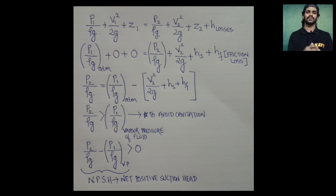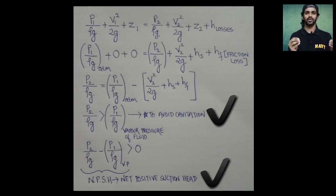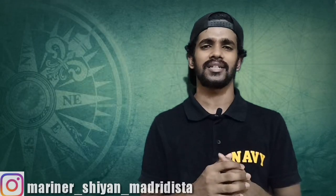To summarize: the pressure at the eye of the impeller should always be greater than the vapor pressure of the fluid — if not, cavitation will occur. NPSH is the difference between the pressure at the eye of the impeller and the vapor pressure of the fluid. We must always keep this difference greater than zero; if it becomes negative, cavitation will occur. Our main intention is to always keep this difference positive.